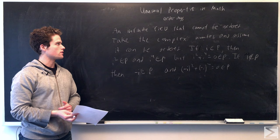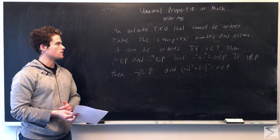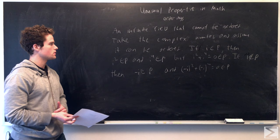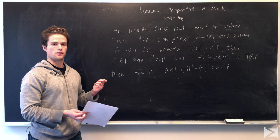We can give an example of an infinite field that cannot be ordered. The complex numbers is an example of such a field. So we assume we do have such a subset P with our previous axioms. We're going to look at i, the imaginary element in the complex field.